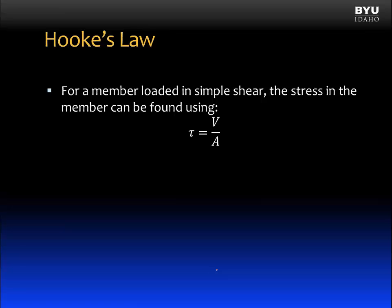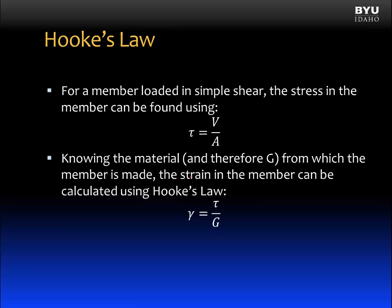We can also apply Hooke's Law to find the shear strain in members that are loaded in simple shear. For a member loaded in simple shear, the stress in the member can be found using this equation: tau, which is shear stress, is equal to the internal shear force V divided by the cross-sectional area. If we know the material and therefore know the shear modulus G, the strain can be calculated using Hooke's Law: gamma, which is shear strain, is equal to shear stress divided by G, the shear modulus.